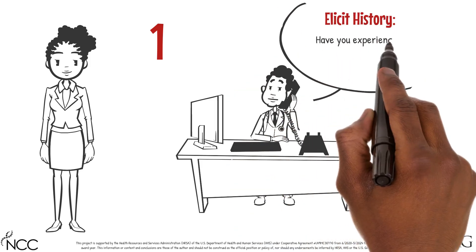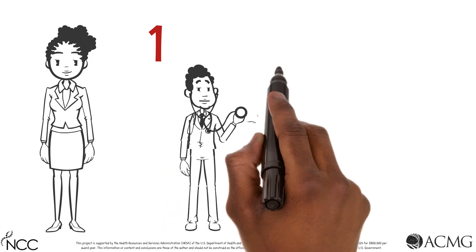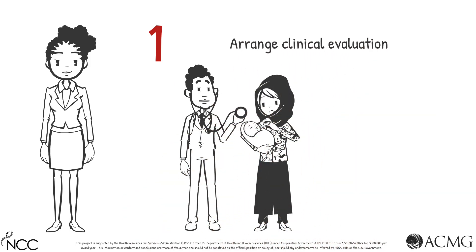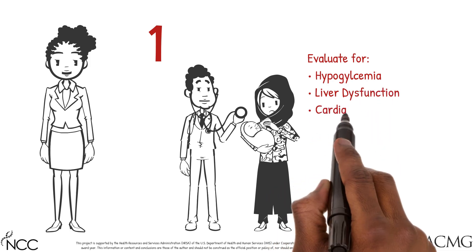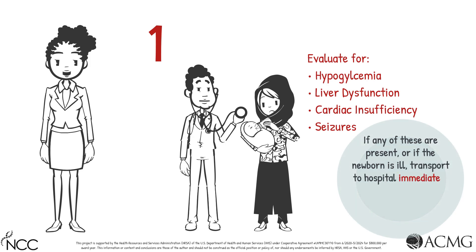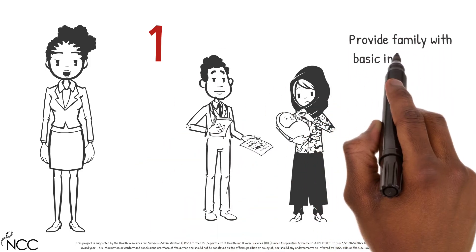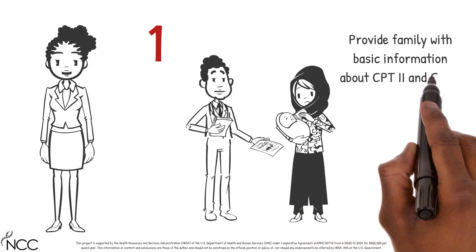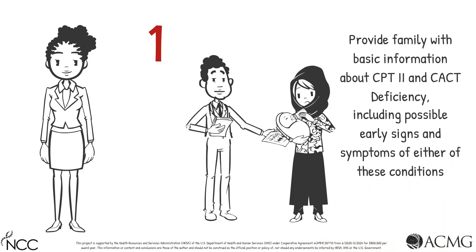Elicit a history of sudden unexpected death in any siblings. Arrange for a clinical evaluation, evaluating for signs of hypoglycemia, liver dysfunction, cardiac insufficiency, or seizures. If any of these are present, or if the newborn is ill, transport to a hospital immediately for further treatment in consultation with a metabolic specialist. Provide the family with basic information about CPT2 and CACT deficiency, including possible early signs and symptoms of either of these conditions.